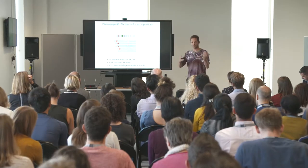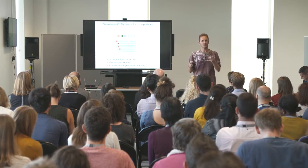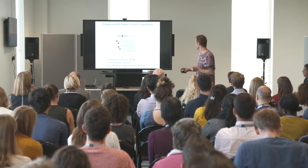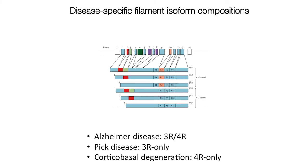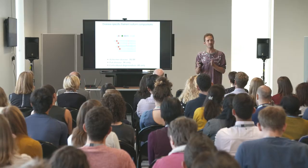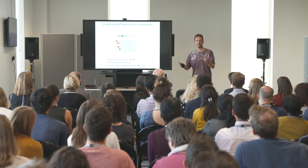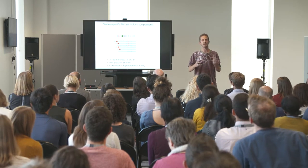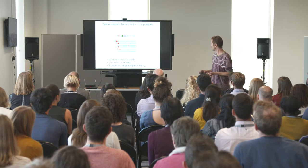Due to splicing, you can have three isoforms where only three repeats are present, because exon 10 can get spliced out — so-called three-repeat tau isoforms. If you look at the tau inclusions from Pick's disease patients, you'll find they only contain three-repeat isoforms. For CBD, these have only four-repeat isoforms, whereas in Alzheimer's disease you have a mixture of all six isoforms from the brain.